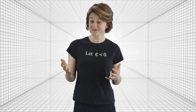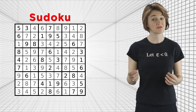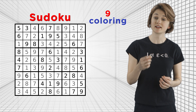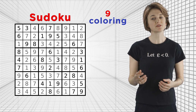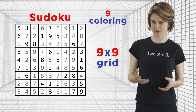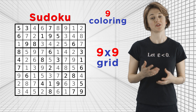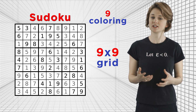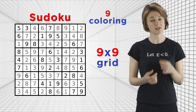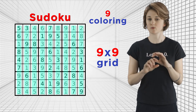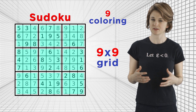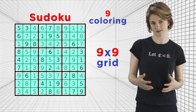Don't believe me? Sudoku is actually solving for a nine coloring. Sudoku is a game where you fill out a nine by nine grid with the numbers one through nine, so that each number only appears once in each column, once in each row, and once within each of the nine three by three blocks.